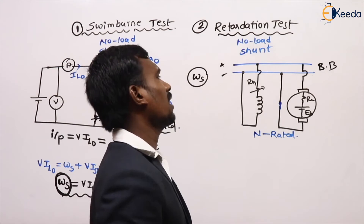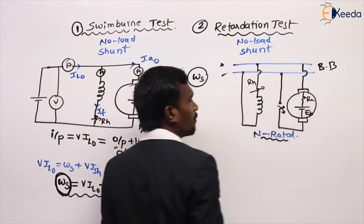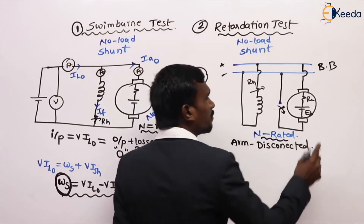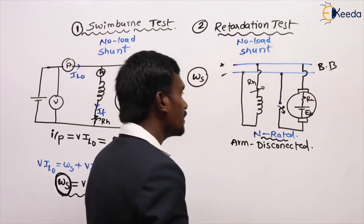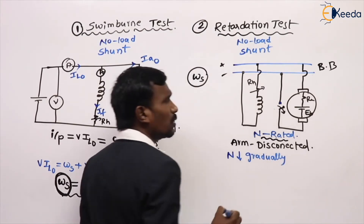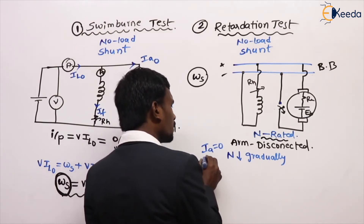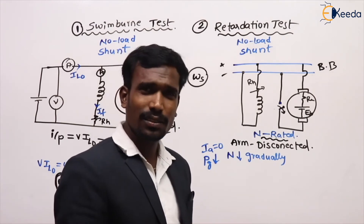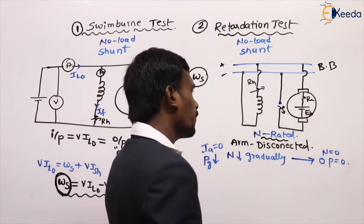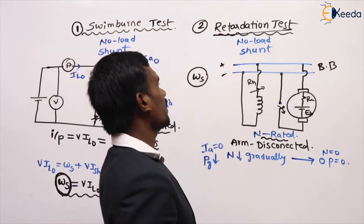The bus bar, field winding, and armature winding are connected. At rated speed, open the armature connection from the bus bar. When the armature is disconnected from the supply, it is disconnected completely. When it is disconnected, the speed of the motor gradually reduces, because there is no current to the armature. When there is no current to the armature, the speed gradually reduces and the power in the armature also gradually reduces. After some extent, it goes to zero. This gradual reduction in speed is retardation — this is the retardation test.